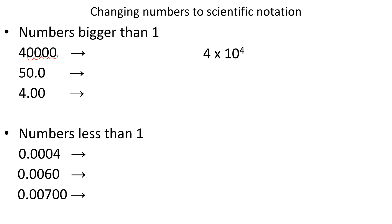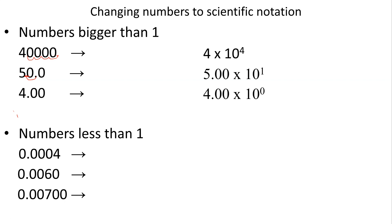Remember, zero is only significant if it follows a number and a decimal point, or it's between two numbers. Nothing's going on here. Next: 50.0. A little tougher because the decimal point is already in between the value. You move it one to the left — these zeros are significant because this number is in front of the decimal point. So it's 5.00 times 10 to the first. Next one: 4.00 — I already have one number to the left of the decimal, so I don't do anything. It's 4.00 times 10 to the zero, because 10 to the zero equals one.